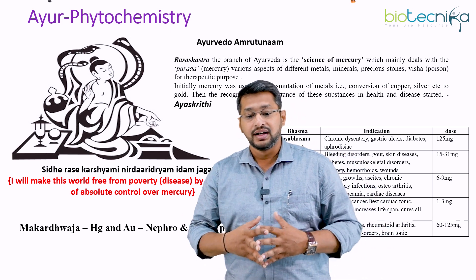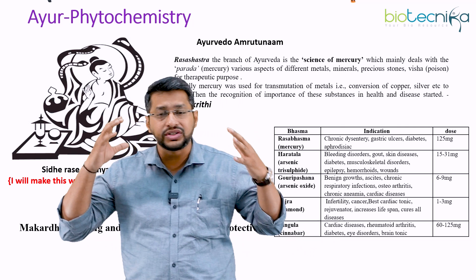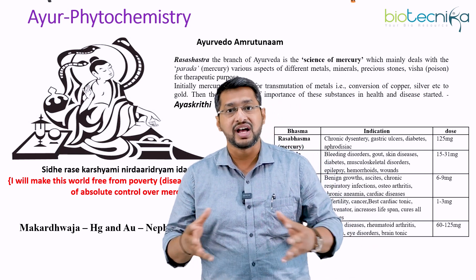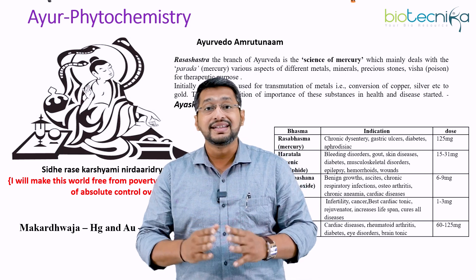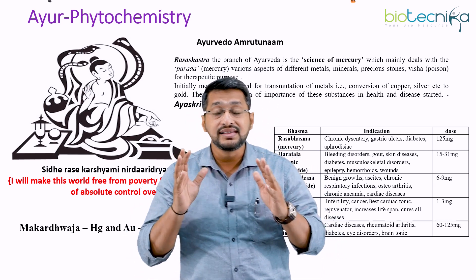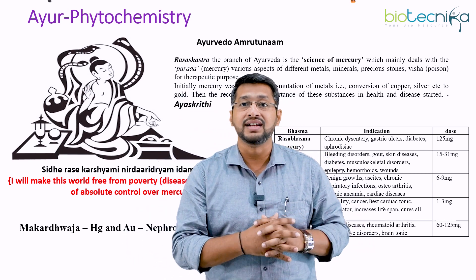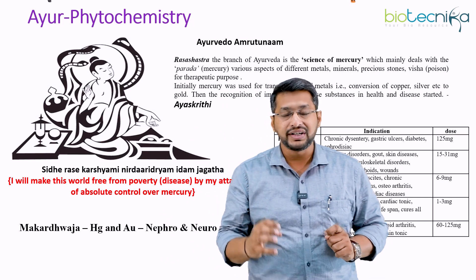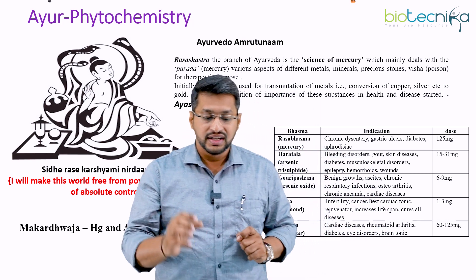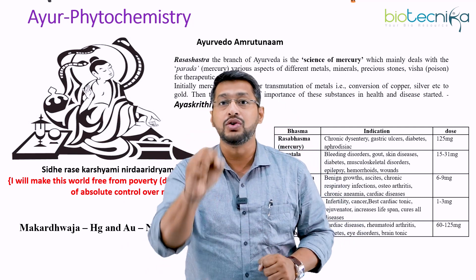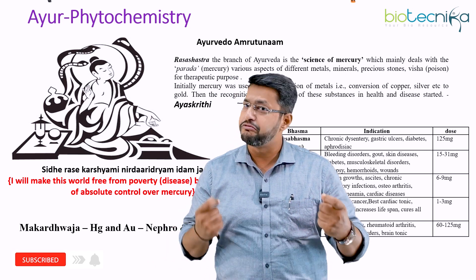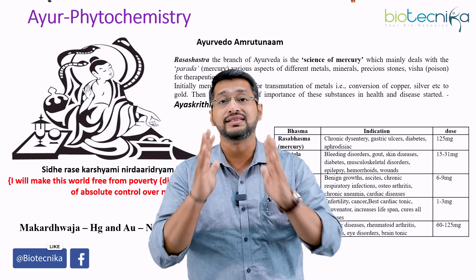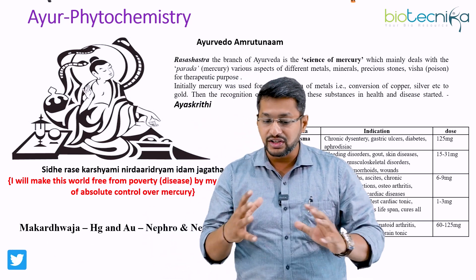In Ayurveda, one of the most ancient forms of medicine, there is a specific branch called Rasa Shastra. Rasa Shastra deals with the science of Mercury. Acharya Nagarjuna says that if the entire world has to be free of any kind of disease or disorder, it is with the attainment of absolute control over Mercury. He claims that Mercury, when utilized properly at a specific concentration, has the power to cure any kind of ailment.